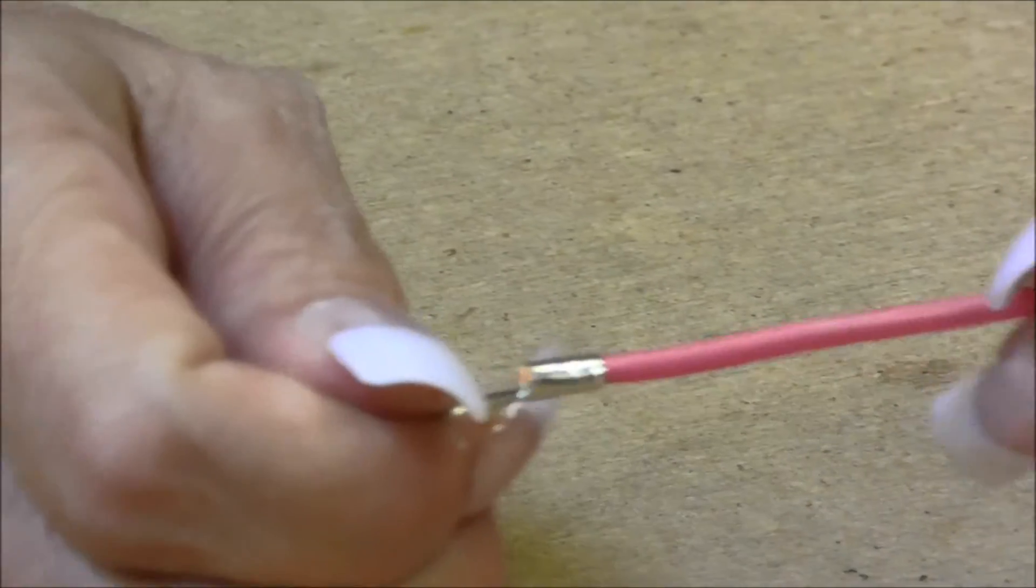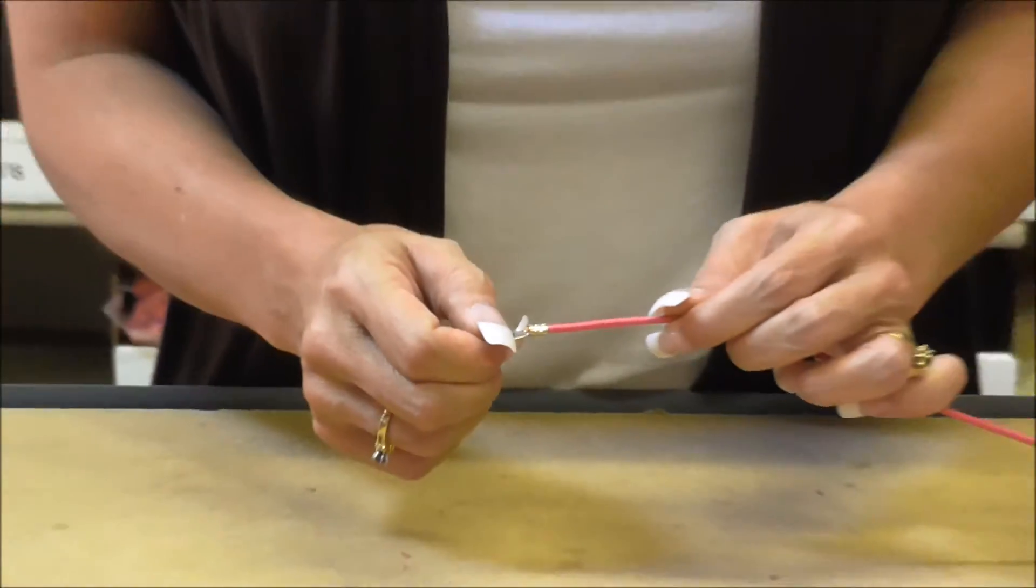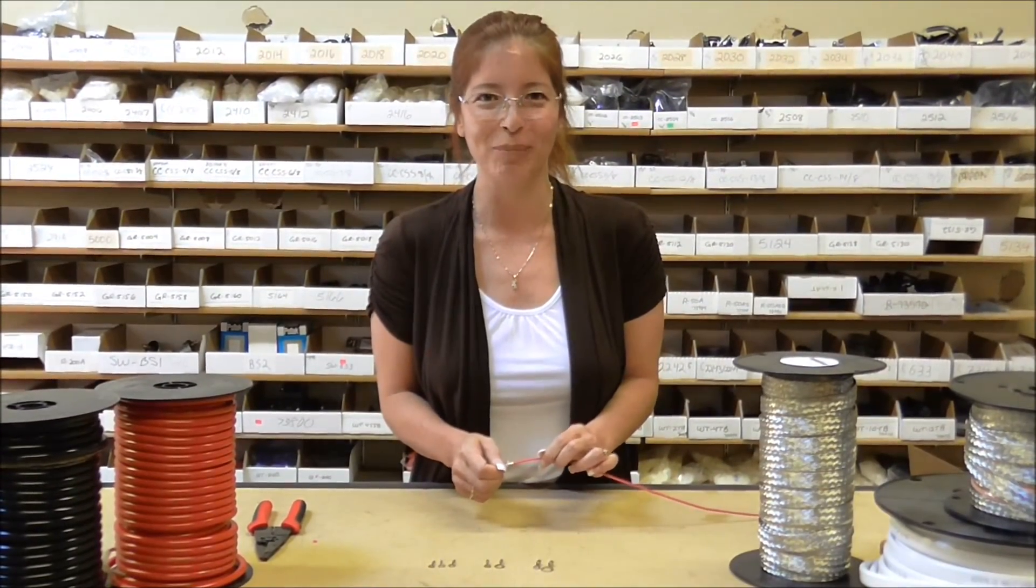Another way that you could use these terminals is you could solder it. And that is how you crimp a high temperature ring terminal. For more information, come to WiringProducts.com.